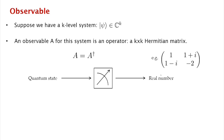So what's an observable mathematically? Let's say we have a k-level system, so psi is an element of a k-dimensional Hilbert space — a complex vector space. An observable A for the system is a k-by-k Hermitian matrix, so it's an operator — a matrix A such that A equals A conjugate transpose. Here's an example of an observable: when you take the conjugate transpose, the diagonal stays the same, but 1+i and 1-i switch places, and then when you take the conjugate you get back the same matrix you started from.